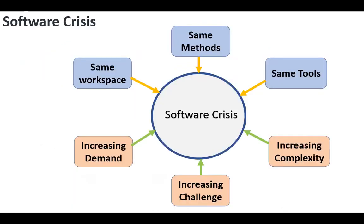There were many difficulties in the development of large software systems during the 1960s and 1970s. The problems stemmed from an inability to apply the techniques used to build small software systems to the development of larger and more complex systems. The typical way to develop small systems can be described as code and repair, or code and fix.